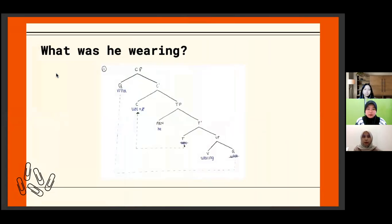This is known as WH movement that moves maximal projections, and there are two movements as drawn in the tree diagram.